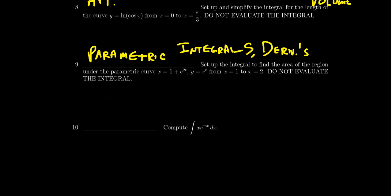The last question in the short response, question number ten, is another integral technique question. You should probably be using integration by parts on question ten. Looking at the example — x times e to the x — the best technique is integration by parts. Be prepared to use integration by parts; it will definitely be on the exam, probably as question ten.